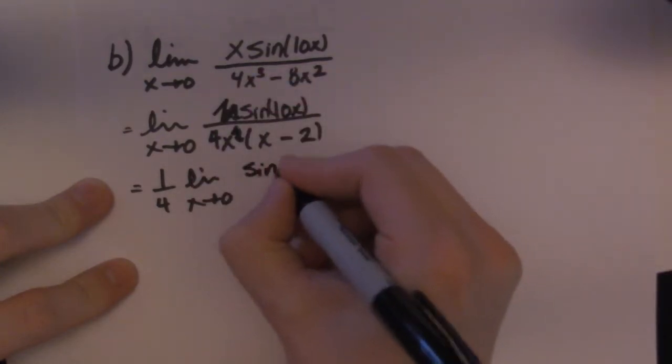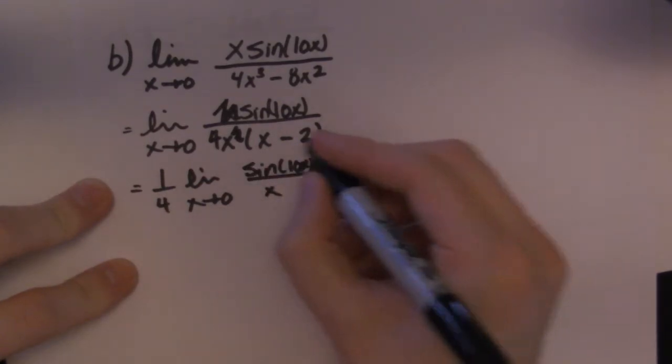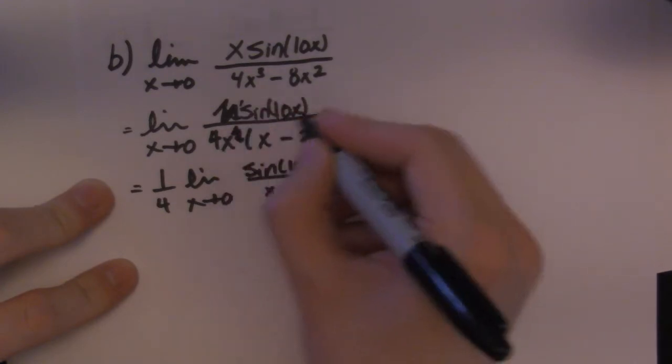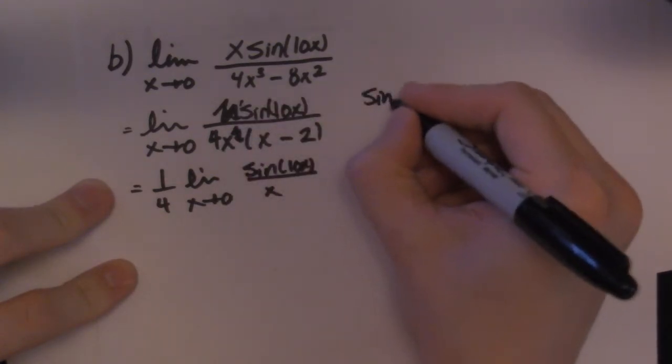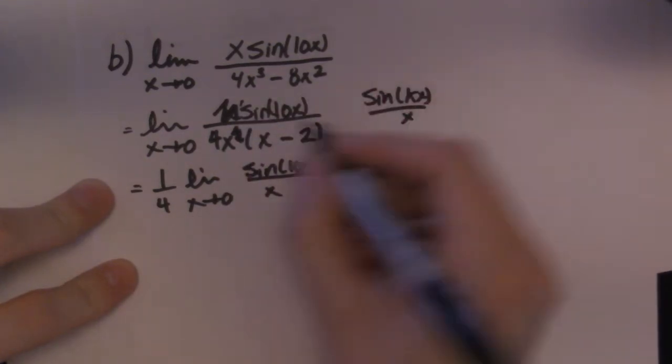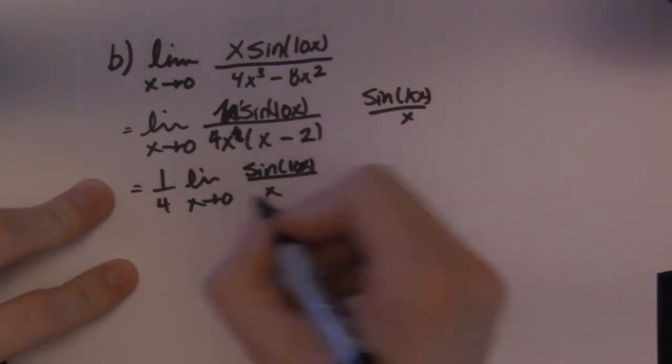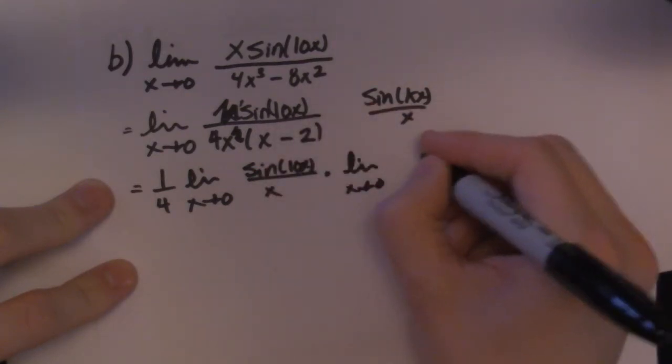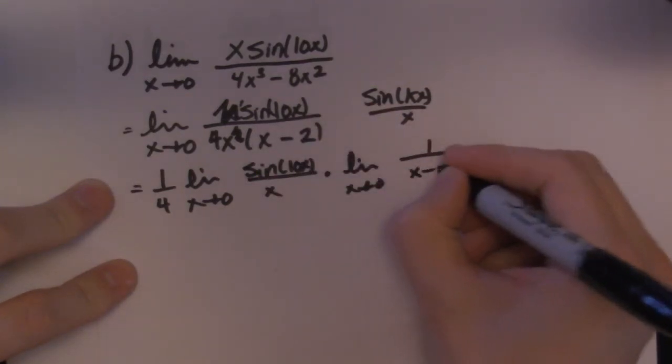So I go with sine(10x) all over x. And that's right there. So that's my sine(kx) over x right there. So my sine(kx) over x is what I'm looking to make and I've already got it made. So the limit of this guy is 10. And then I'll rewrite what I have left. So what I have left is nothing on the top. It was 1. And then the x minus 2.